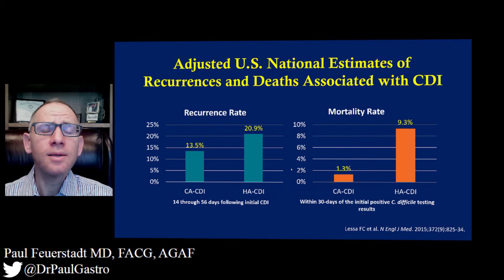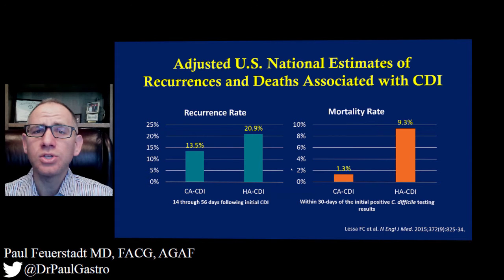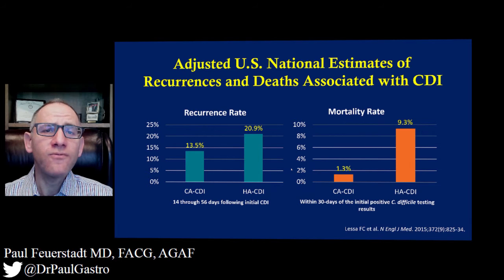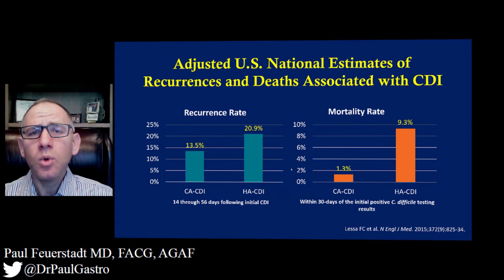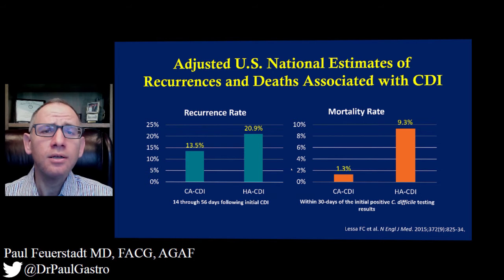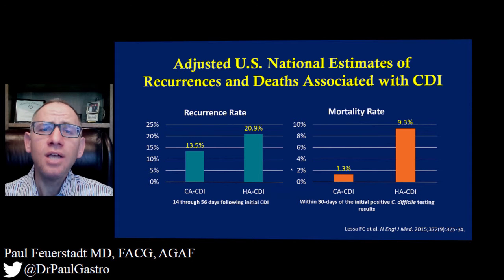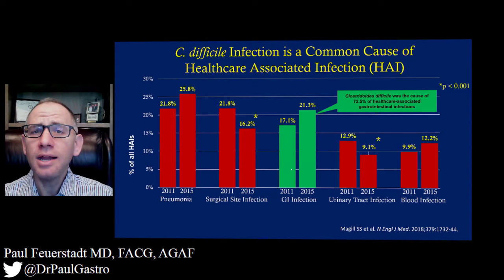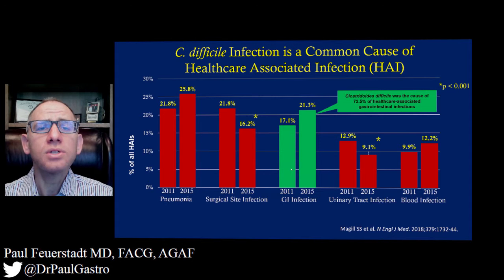A very important concept is that healthcare-associated infection has more severe outcomes than community-associated infection. Recurrence rates in the community were approximately 13.5% versus 20.9% with healthcare-associated disease. Short-term mortality in the community was 1.3% versus 9.3% with healthcare-associated infection. It does matter which type you have, and in the United States, healthcare-associated infections with C. difficile are the most common of all healthcare-associated infections.